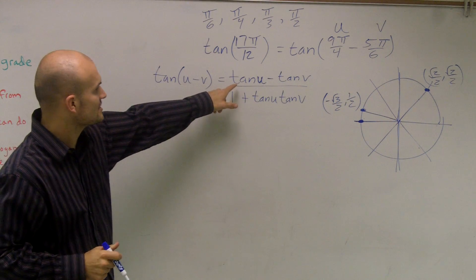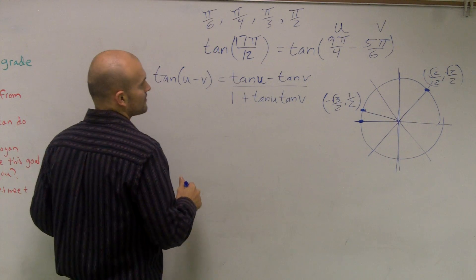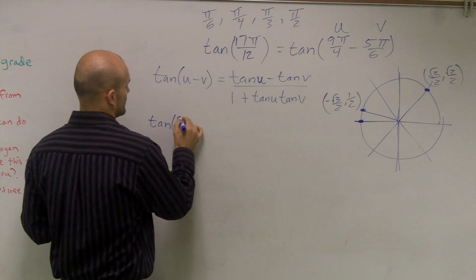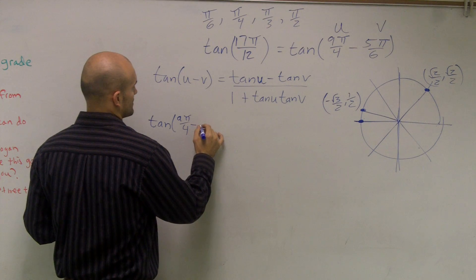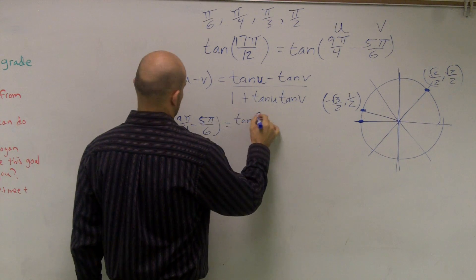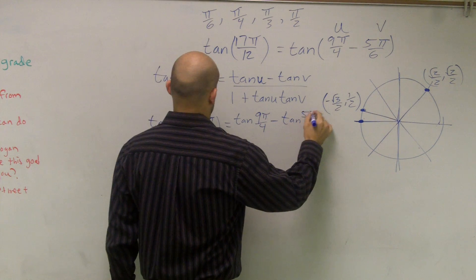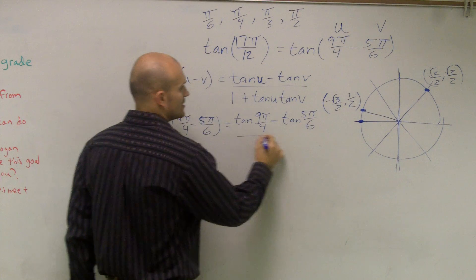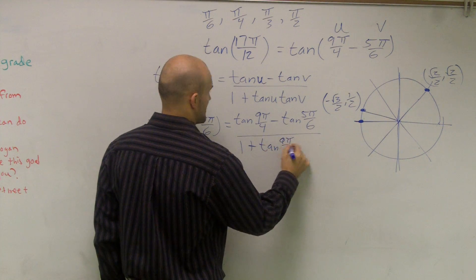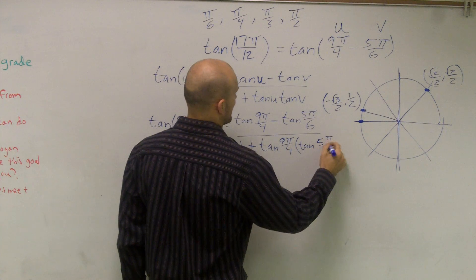So let's see here, the tangent of, oh, now I've got to plug in my u and my v. So now I'll plug in my u and my v, so tangent of 9π over 4 minus 5π over 6 equals tangent of 9π over 4 minus tangent of 5π over 6 divided by 1 plus tangent 9π over 4 times tangent of 5π over 6.